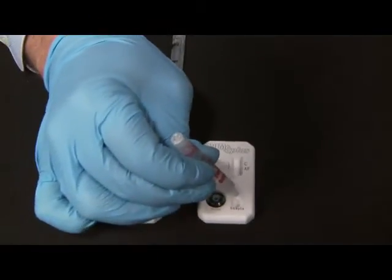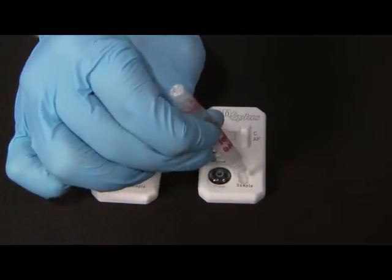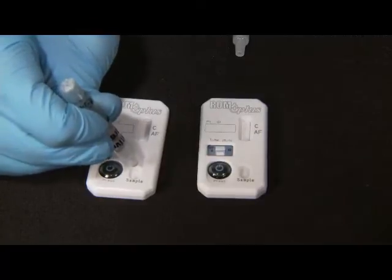Add four to six or more drops of the positive control solution to one ROM Plus test cassette. Add four to six or more drops of the negative control solution to the other ROM Plus test cassette.